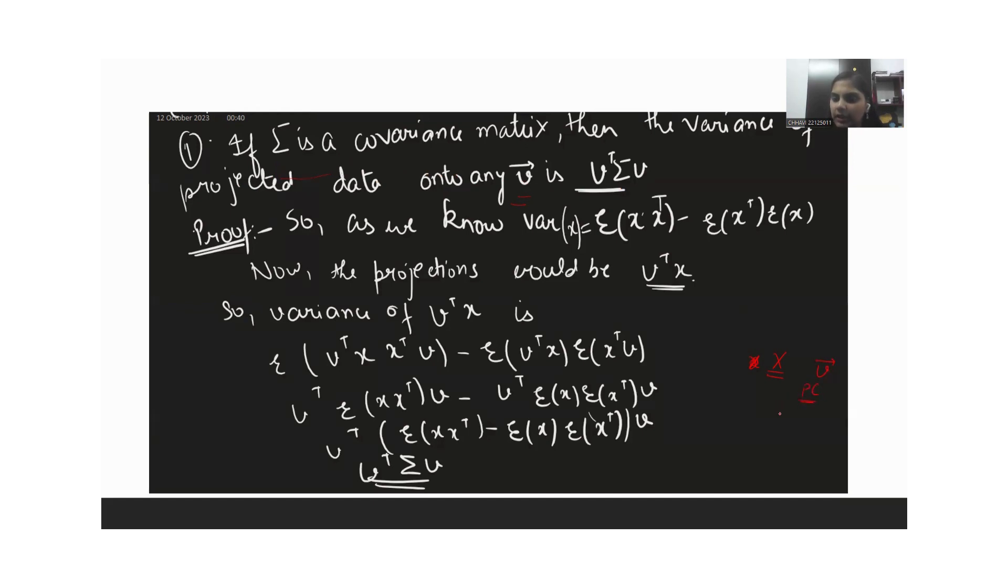So the projected data that we have would be X dot V. The variance of this X dot V would be V transpose Sigma V. The proof is given here, you can understand it easily.